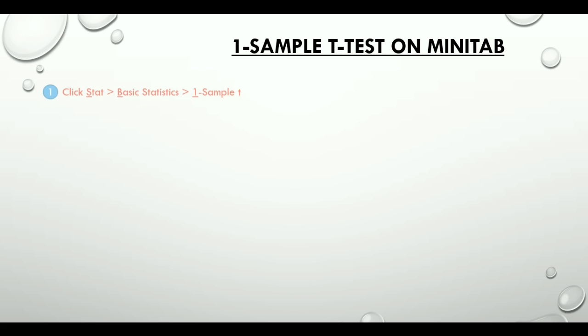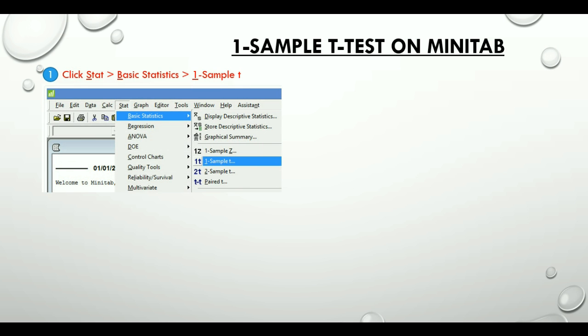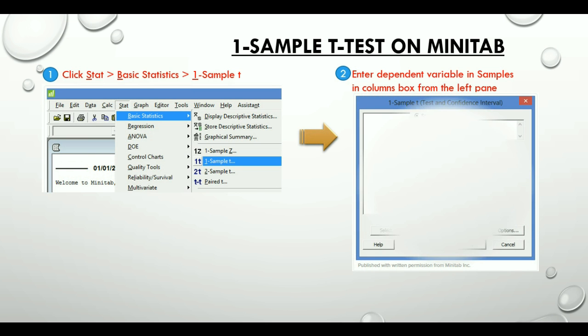We click on stat, basic statistics, 1 sample t. Then we enter the dependent variable in samples in column box by clicking the variable name on the left pane and input the hypothesized mean.